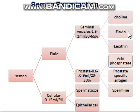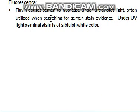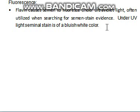The first component to be covered is flavin. Flavin is an organic compound present in semen that is produced from the seminal vesicles. Flavin has a tendency to fluoresce under UV light. It causes semen to fluoresce under UV light, and this is often utilized when searching for a semen stain. By impinging UV light on a suspected stain, you would be able to see the fluorescence.